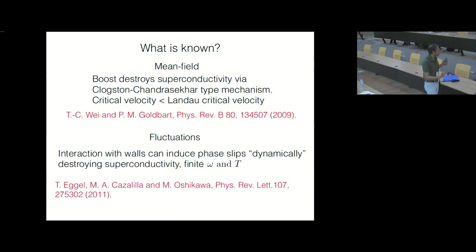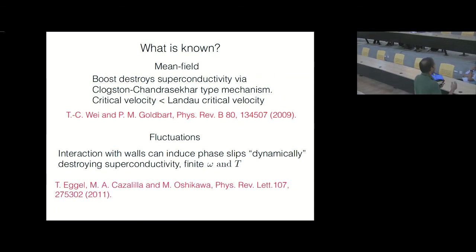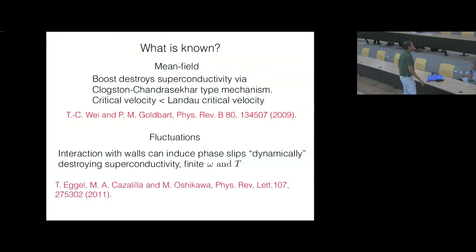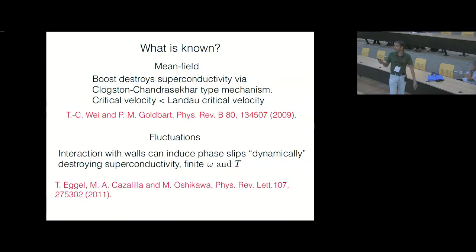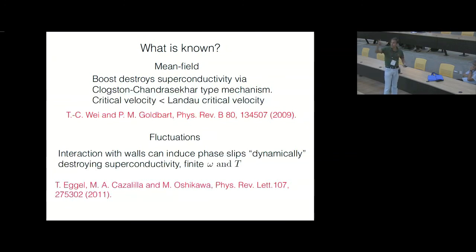Here what happens is that in this one-dimensional superconductor, you have left movers and right movers, and in some sense you can think of the left movers and right movers as being like spin-up and spin-down. When you apply a boost — when you make this thing move with a certain velocity — you are preferentially populating one species over the other, and this gives you the Clogston-Chandrasekhar mechanism. Eventually when you preferentially populate one species sufficiently over the other, it turns out in this calculation that you lose superconductivity.